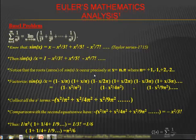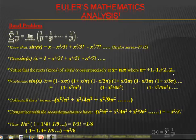Euler realized that the roots of sin(x) over x occur at x equal to n multiplied by pi, where n could be equal to plus or minus 1, plus or minus 2, plus or minus 3, and so on. Then he could factor out sin(x) over x and got 1 minus x over pi, multiplied by 1 plus x over pi, and so on.